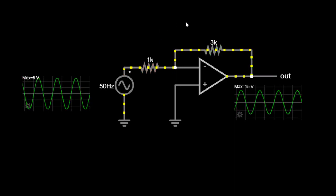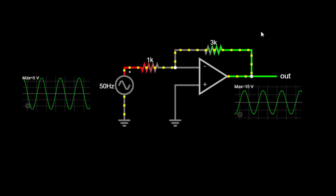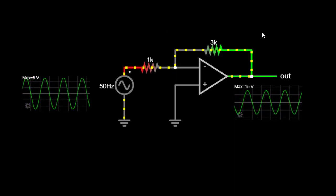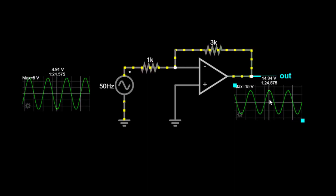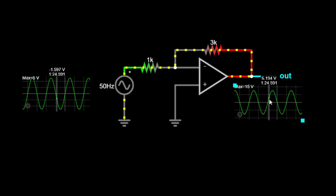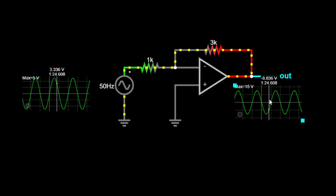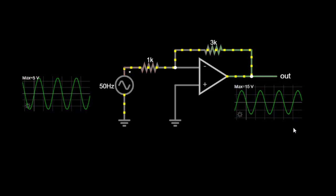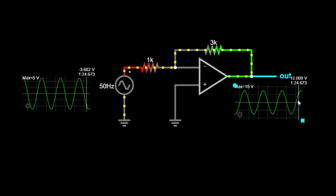The crucial feature of the inverting amplifier is that the output voltage is an inverted, amplified version of the input voltage. This inversion occurs due to the negative feedback provided by the feedback resistor, RF, connected between the output and the inverting input of the OPAMP.